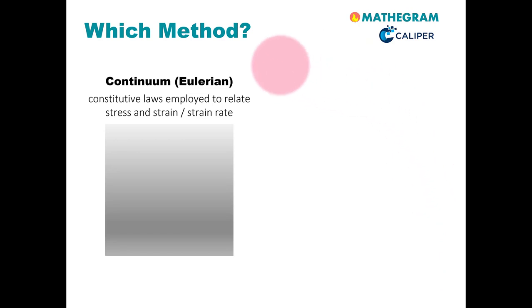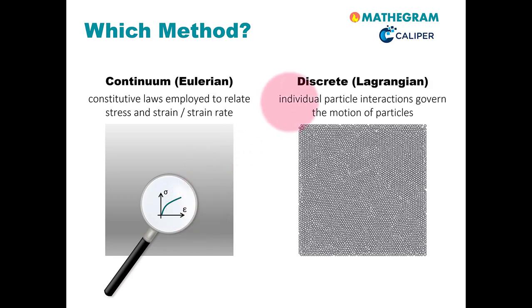In order to further contrast the different methods, I would like to introduce the so-called continuum. Continuum is very often used interchangeably with an Eulerian method. When we follow such a continuum approach, we need to use constitutive laws to relate the stress in the material and the strain, for example. If we are interested in fluid flow, we very often also consider the strain rate.